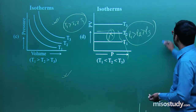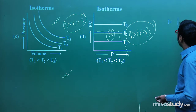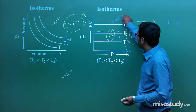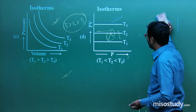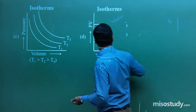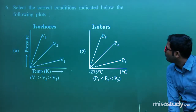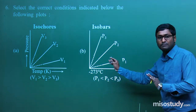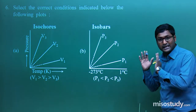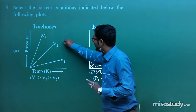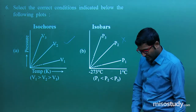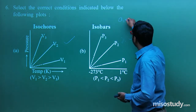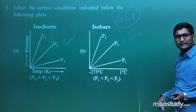For the PV versus P graph at constant temperature, that is a straight line because PV = constant. This is also a correct option. This is a multiple-type question. After checking all options: A, C, and D are the correct options.